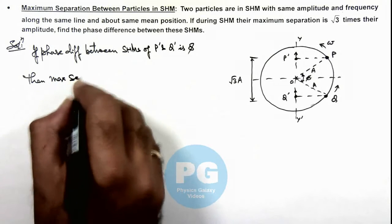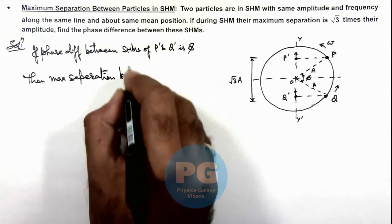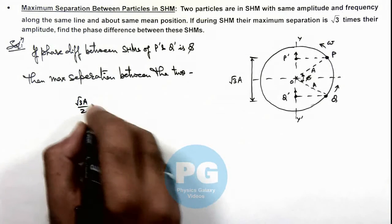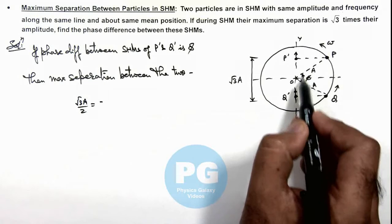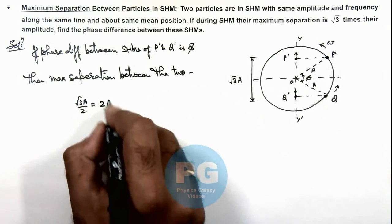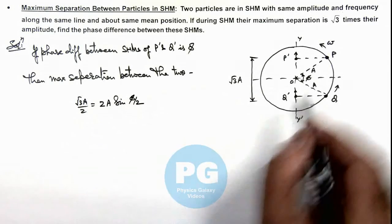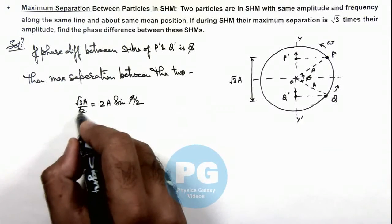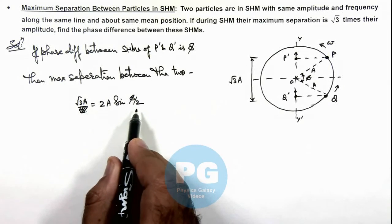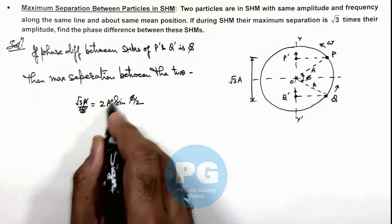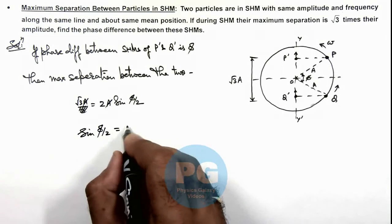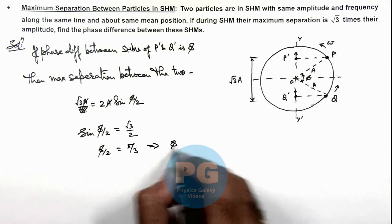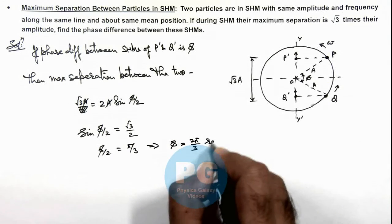Then maximum separation between the two can be given as root 3 A, and this must be equal to - here you can see if this amplitude is A, this angle is phi, then this will be 2A sine phi by 2. Because A sine phi by 2 is this distance, so this total distance root 3 A will be 2A sine phi by 2. In this situation, we can see this A gets cancelled out and we are getting sine phi by 2 equals root 3 by 2. And here the value of phi by 2 we are getting is pi by 3. This implies the value of phase difference between the two is 2 pi by 3 radians. That is the final result of this problem.